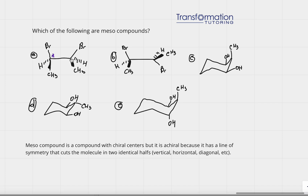The second carbon has the same connections: bromine, hydrogen, CH3, and a carbon with bromine — four different groups as well. So these are two chiral centers. For a meso compound we should have two or more chiral centers.